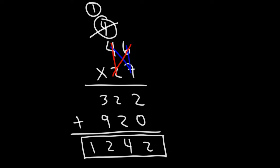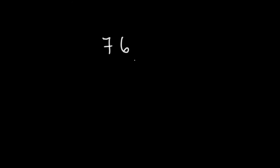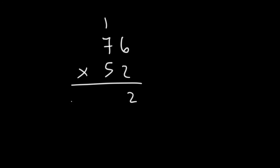Now if you were confused by that example, let me give you another one that's similar. For the sake of practice you can try it. Let's multiply 76 by 52. So we're going to start with 2 times 6. 2 times 6 is 12. Let's write the 2 first and then carry over the 1. And then 2 times 7 is 14, plus 1, that's 15.